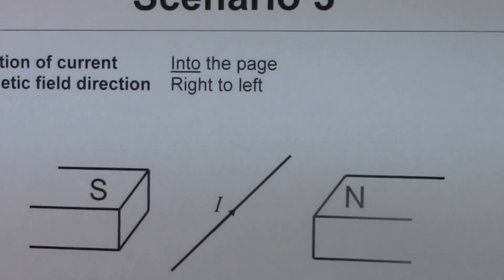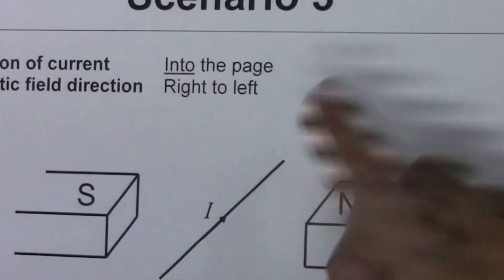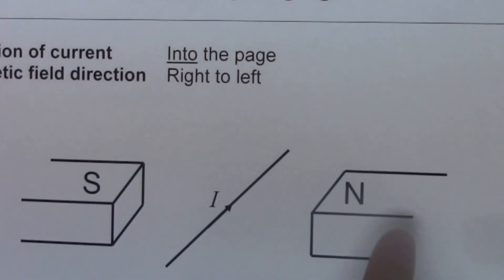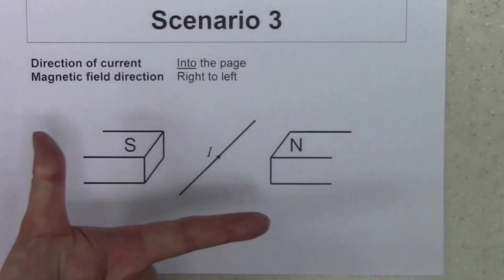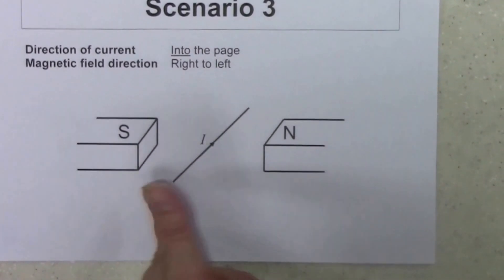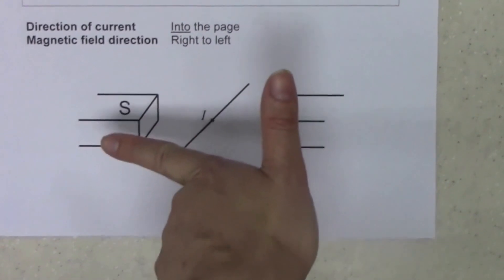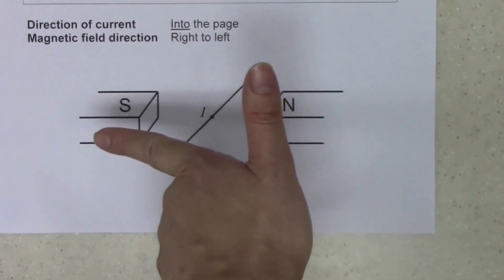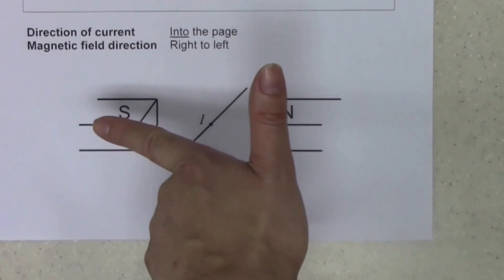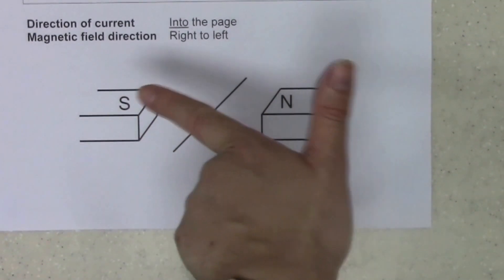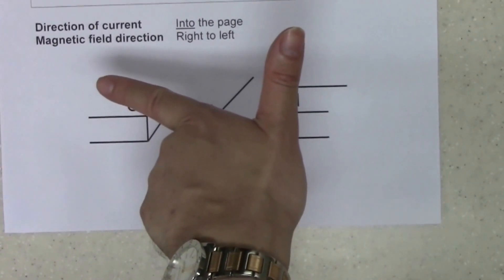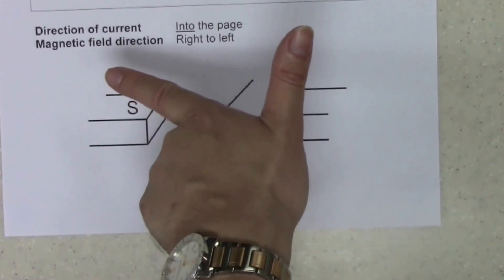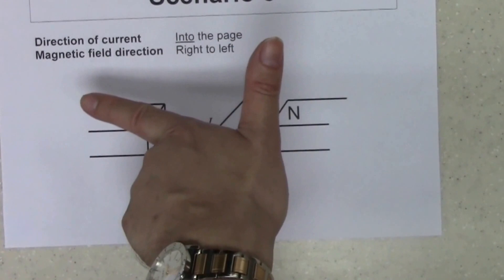In scenario three, the direction of the current is going into the page, and the magnetic field is now from the right to the left. Align the index finger to the direction of the magnetic field, which is from right to left. Then align the middle finger to the direction of the current, pointing into the page. The thumb is pointing upwards, meaning the wire will move upward. The direction of the force is upward.